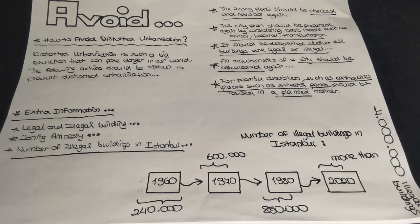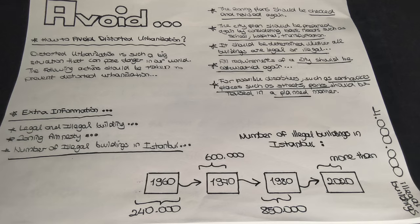The number of illegal buildings in Istanbul is very high. In line with a report published in 2019, it was emphasized that there are 4 million illegal buildings in Istanbul. With this news, we can see the level of distorted urbanization in Istanbul — it is highly dangerous for us. In 1960 there were 240,000 illegal buildings. Because distorted urbanization can affect our future a lot: natural resources are decreasing, water resources are decreasing, traffic is increasing, and concrete is increasing.